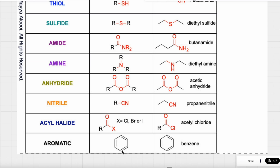Finally, if I have a benzene — a cyclohexane ring with three double bonds — this is called a benzene ring, and I have an aromatic functional group. The most popular example is just benzene. In the next video, we will do some practice. Let's get going.